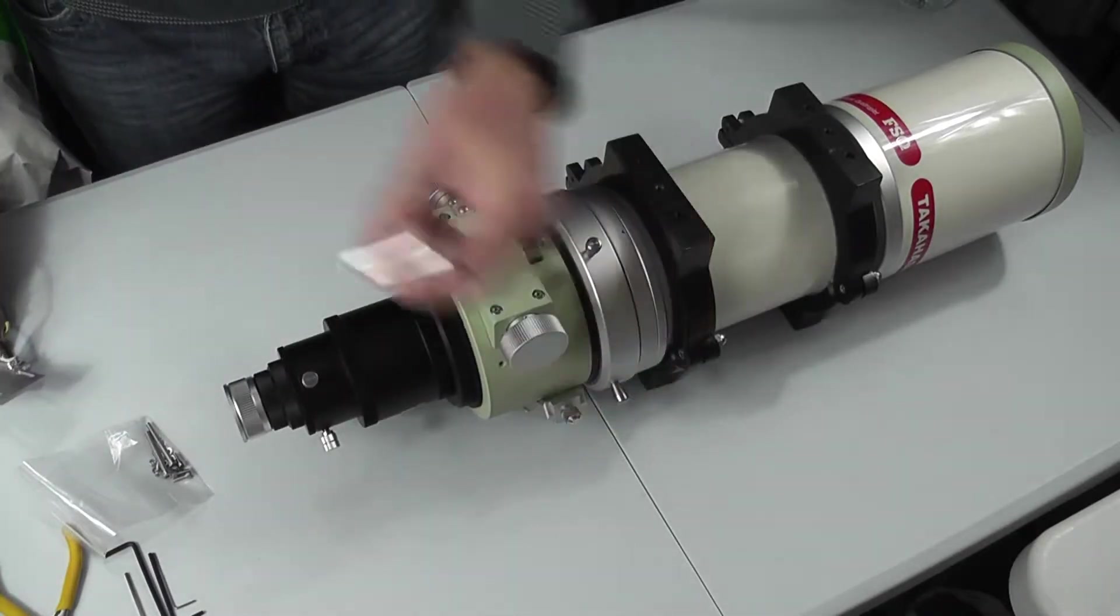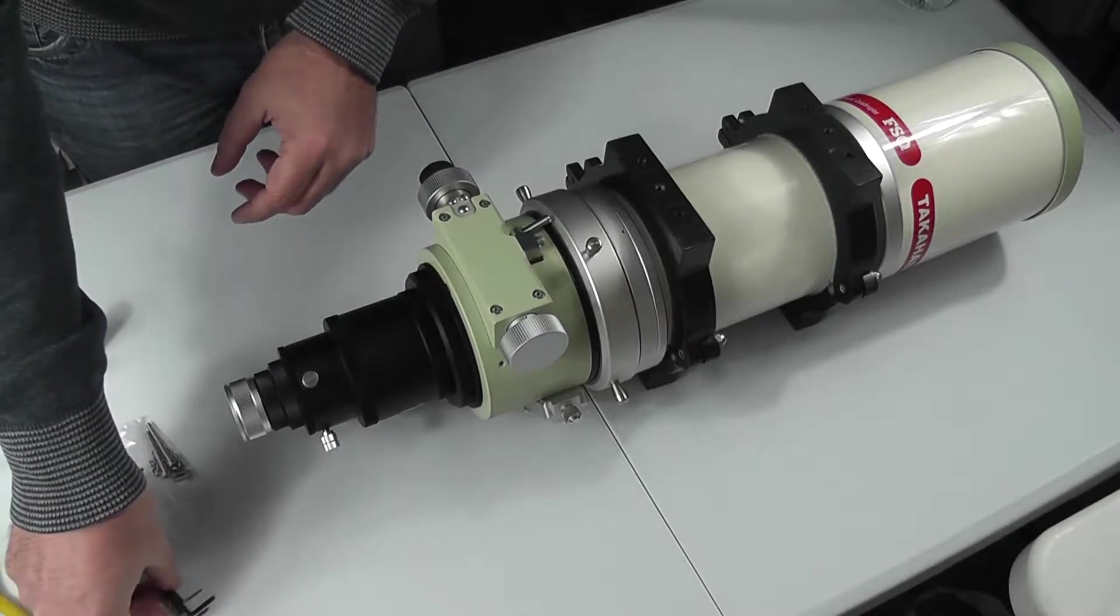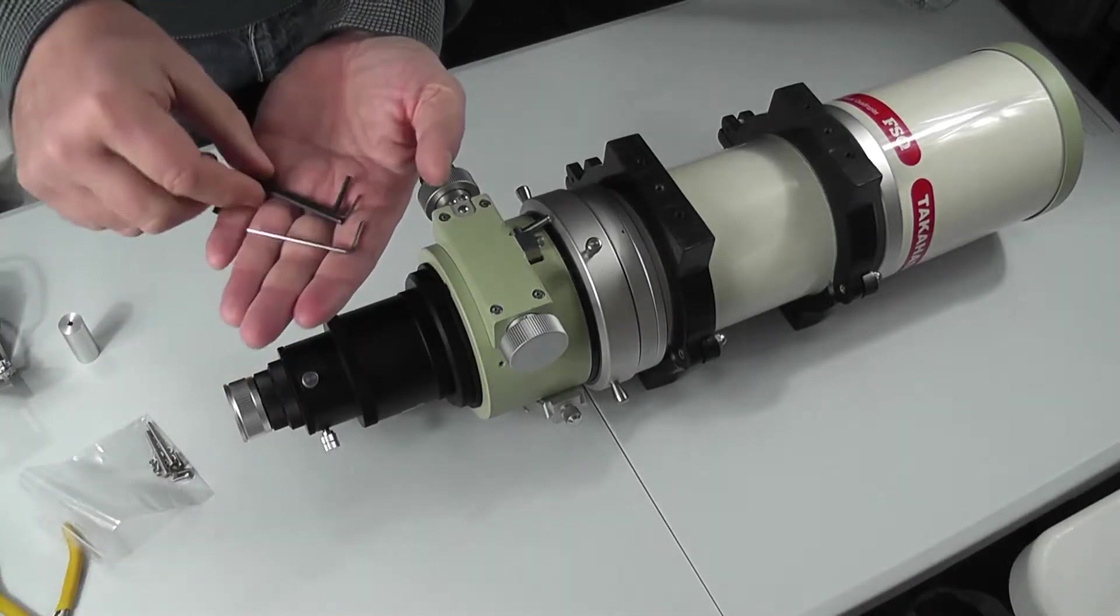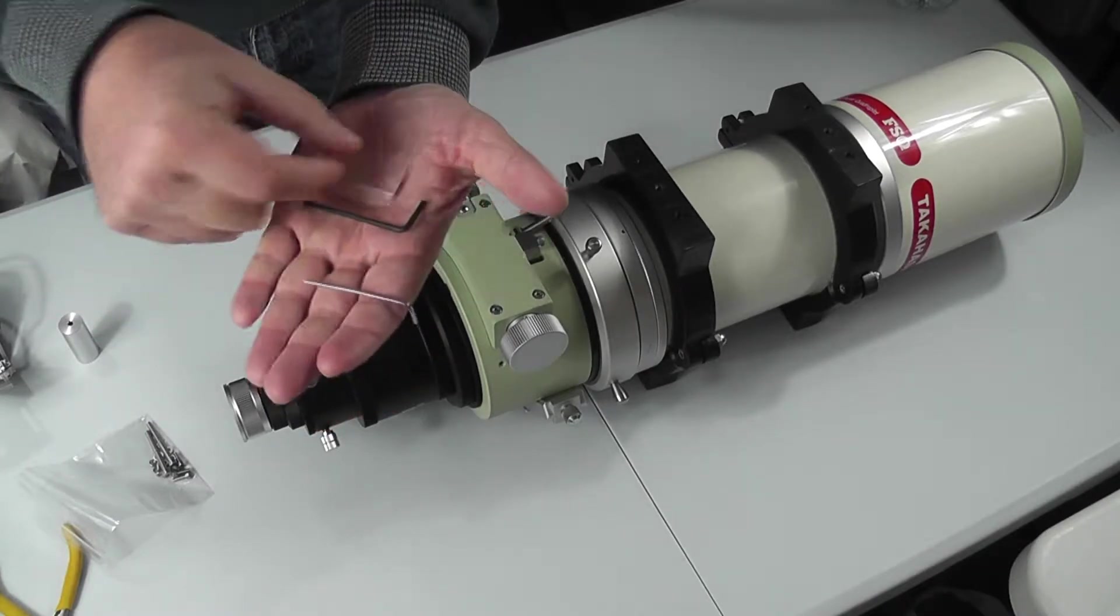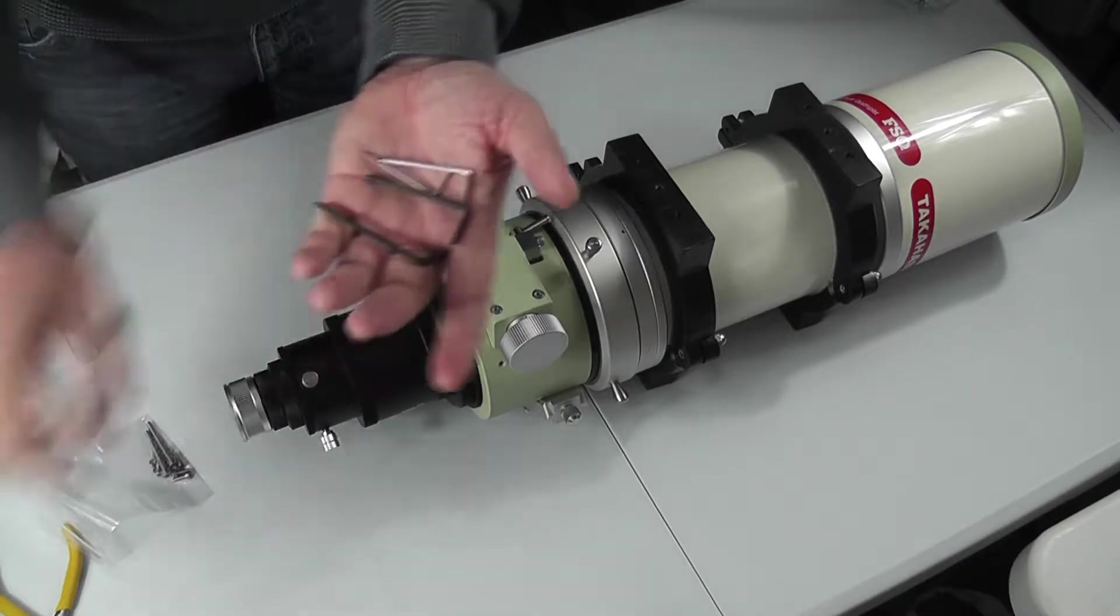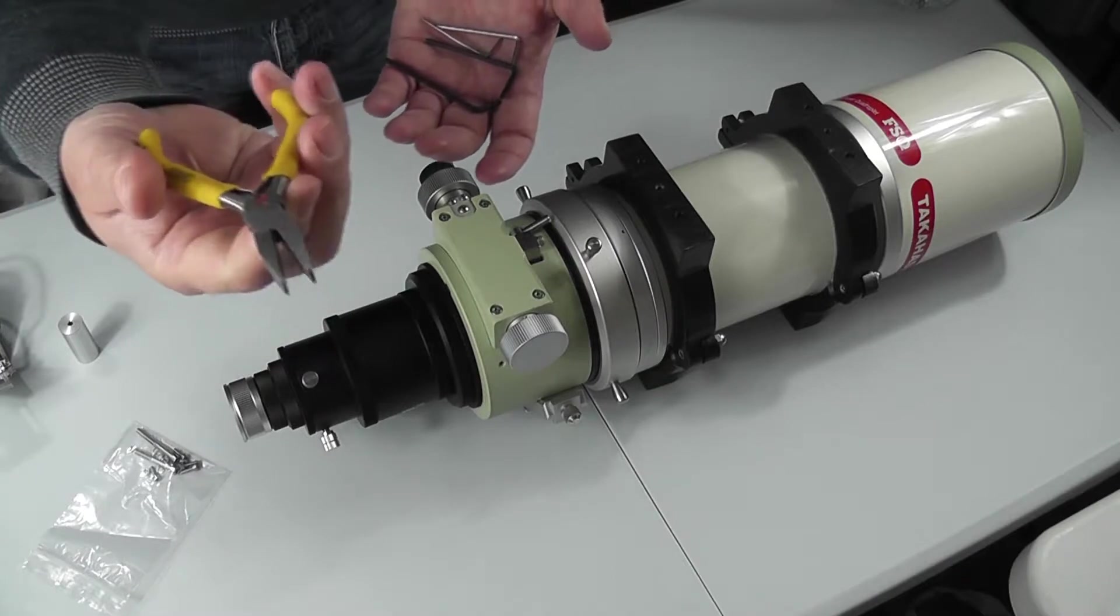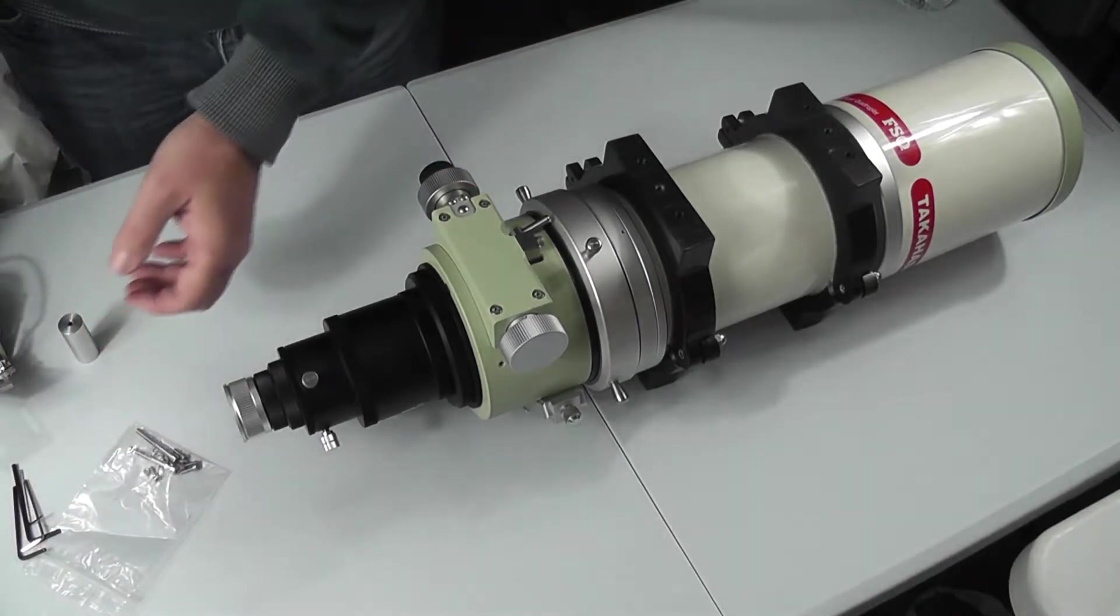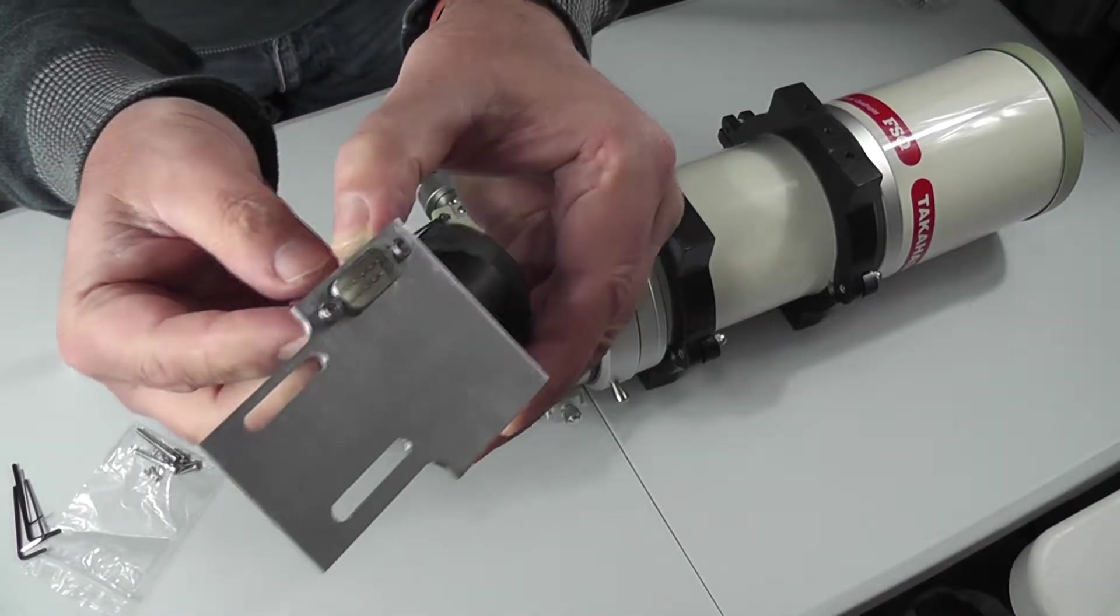You need some Allen keys for this. You actually need a 1.5mm, 2mm, 2.5mm, and a 3mm Allen key, so varying sizes for the different screws that come with the kit. And a little pair of pliers or something similar just to hold onto the small nuts at the back of the bolts that are given to you.